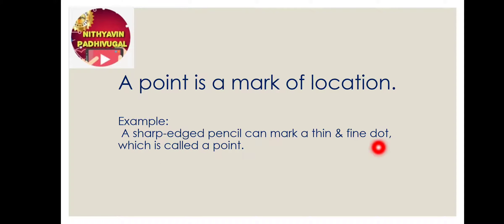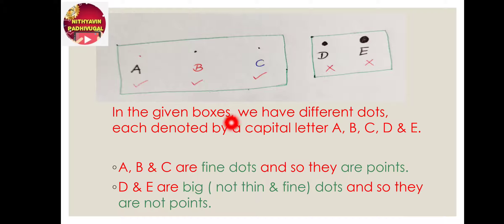That fine dot is called a point. In the given boxes, we have different dots, each denoted by a capital letter A, B, C, D, and E. A, B, and C are fine dots, and so they are called points.